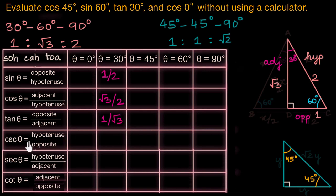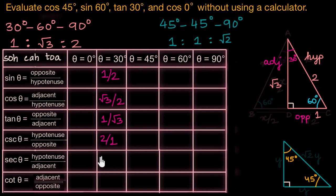Cosecant theta is the reciprocal of sine theta, so hypotenuse over opposite, which is 2/1 = 2. Secant theta is the reciprocal of cosine theta — hypotenuse over adjacent — which is 2/√3. And cotangent theta is adjacent over opposite, so √3 over 1, which is simply √3.